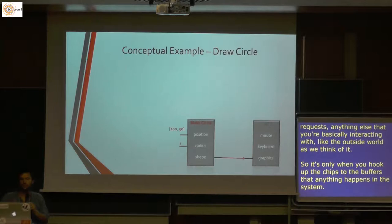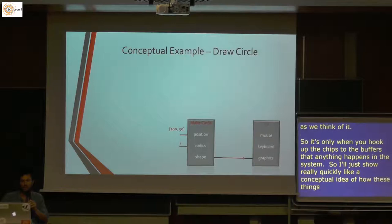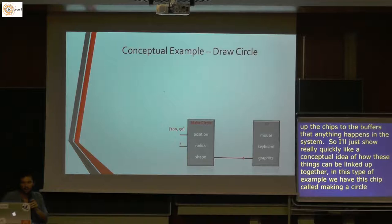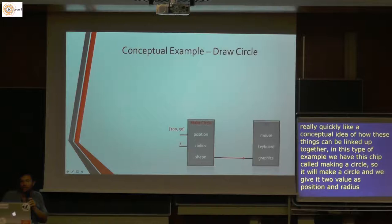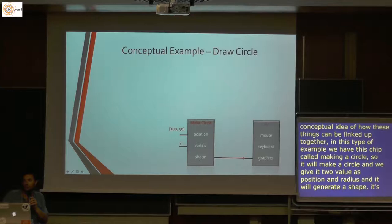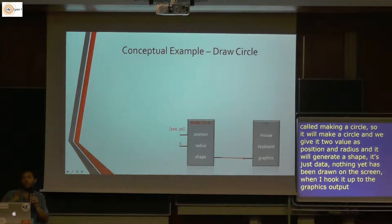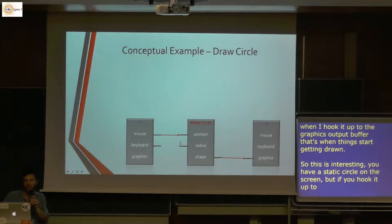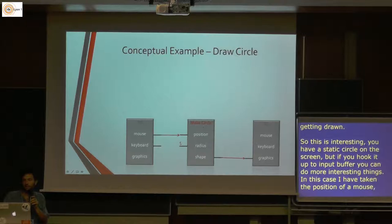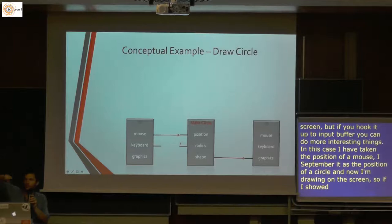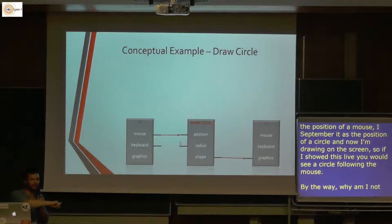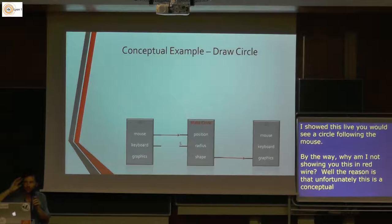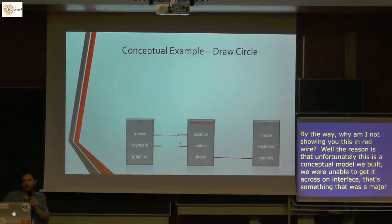Let me show a conceptual idea of how these things link up. We have a chip called 'make a circle' — you give it a position and a radius, and it generates a shape. That shape is just data; nothing is being drawn yet. When you hook it up to the graphics output buffer, things start getting drawn. By the way, why am I not showing this live in Redwire? Unfortunately this is a conceptual model that we built but were unable to really get across in the interface — that was a major drawback — so I'm explaining with slides rather than directly in the program.